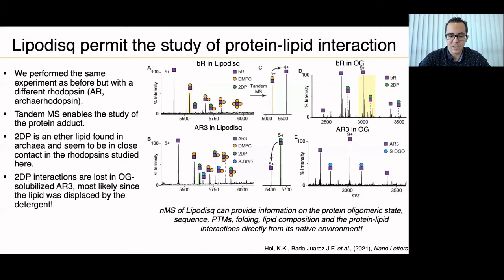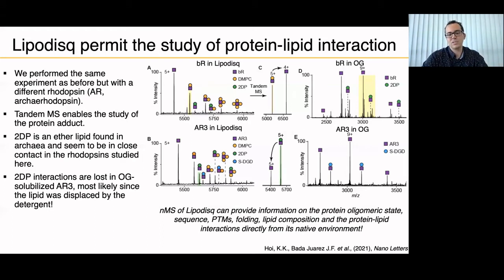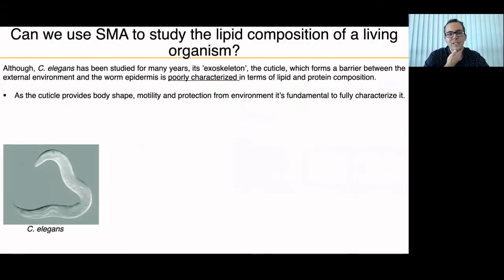In summary, native mass spectrometry of lipodiscs can provide information on protein oligomeric state, sequence, post-translational modifications, folding, lipid composition, and protein-lipid interaction directly from the native environment. But can we use SMA to study the lipid composition of a living organism?